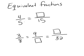So I look at my five and I say what do I need to multiply times five to get fifteen? I multiply times three. So what I do to the bottom I do to the top. So four times three equals twelve. So four fifths would equal twelve fifteenths.